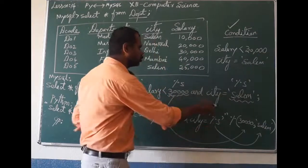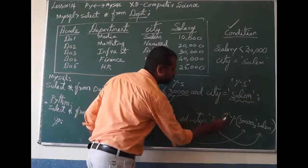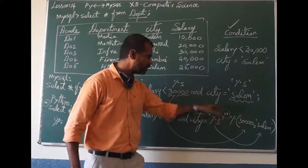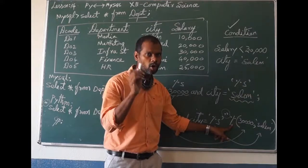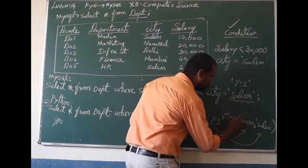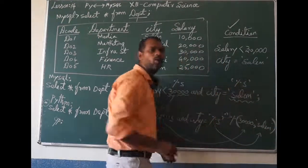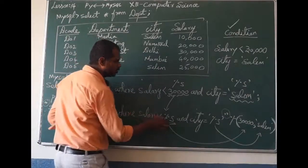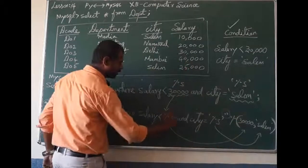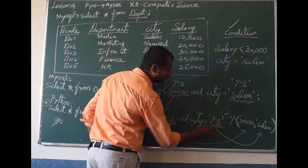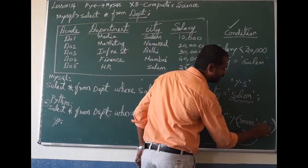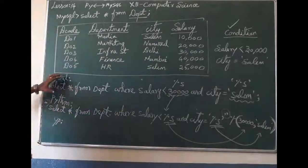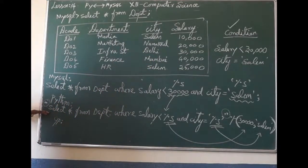Once the full command is over, close the double quotes. After this, give one % sign, then open bracket and close bracket. Inside, put the actual values: first number is 30,000, then comma, then single quotes 'Salem'. Don't forget to close the bracket. This is how you write the SQL command, and this is how you write the Python command.